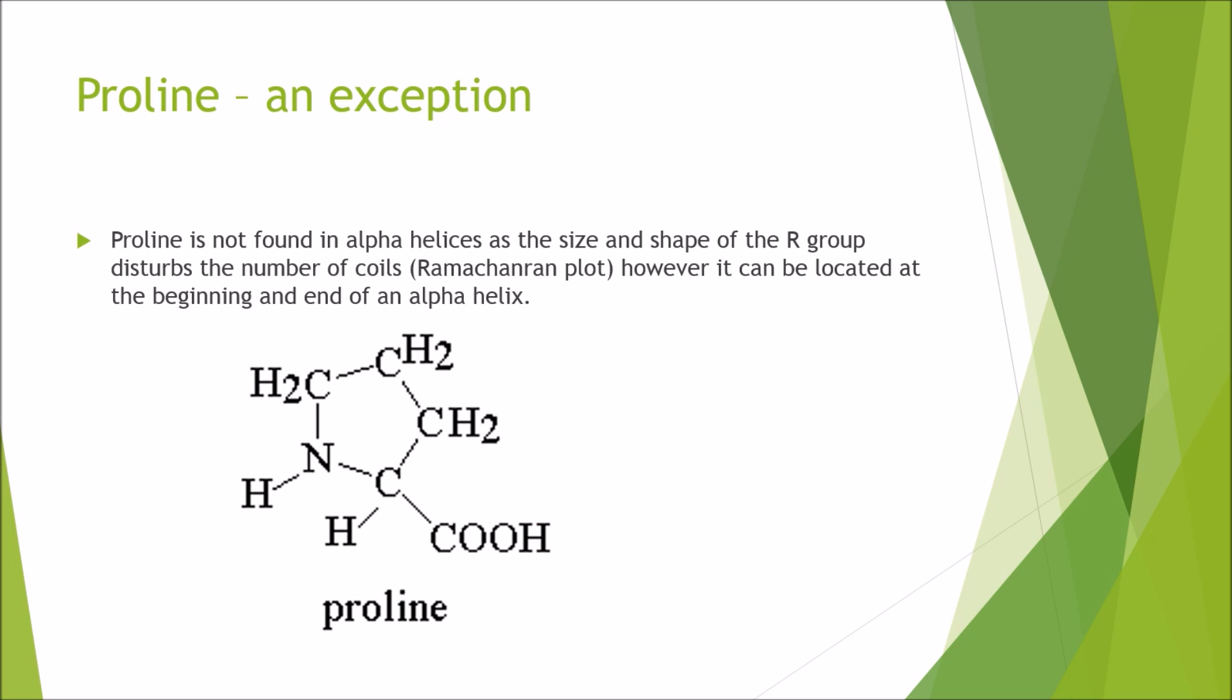Now I'm just going to give you a reason why proline is an exception. Proline is not usually found in alpha helices as the size and the shape of the R group will disturb the number of coils which is also called the Ramachandran plot if you want to have a look at that. But you can locate this at the beginning and end of an alpha helix. As we can see here, this is the central carbon and this is the R group, and if you notice something the R group connects to the amino group. This means that instead of turning the alpha helix 100 degrees it will turn it a different amount.